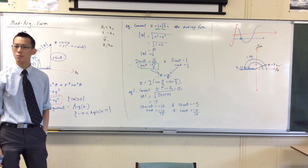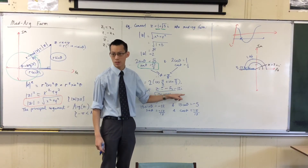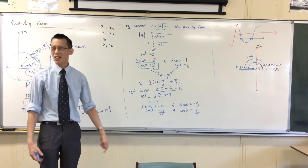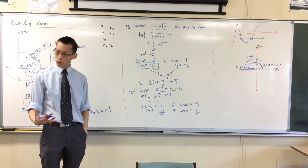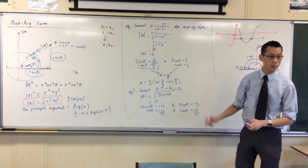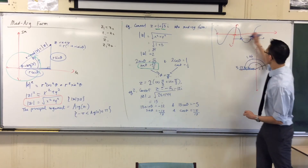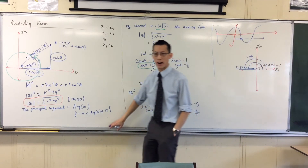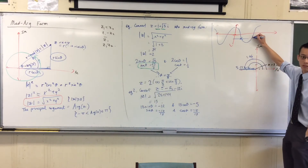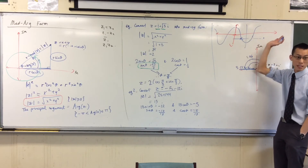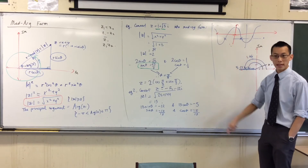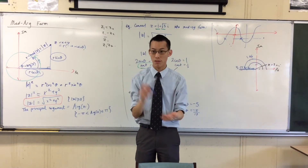I want a third quadrant angle, and it is there on the cosine graph, but how do I get to it? Cosine is an even function, so I can reflect across. But the third quadrant argument is not that angle — it's outside the principal argument domain, it's past π. I want to go in the other direction, so that would be negative 1.96.